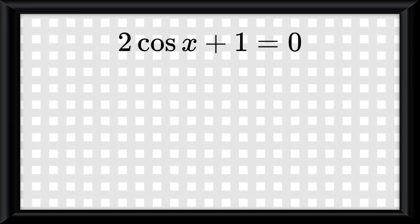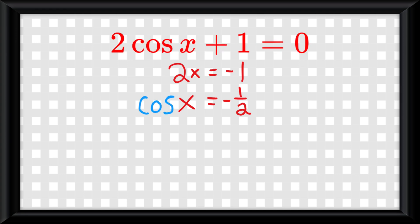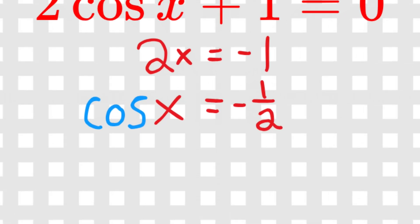2 multiplied by cosine of x plus 1 is equal to 0. Here's my advice: get rid of the cosine and add it back later. So now it's just 2x plus 1 equals 0, so 2x equals negative 1, and x equals negative 1 over 2. Great, now that we've solved for x we can add back the cosines, so cosine of x is equal to negative 1 over 2.